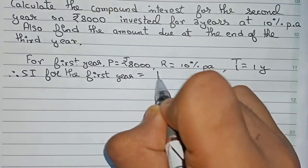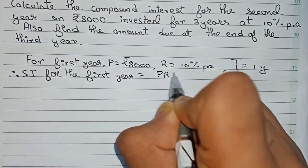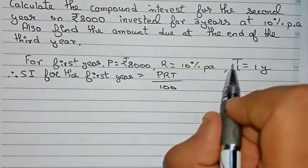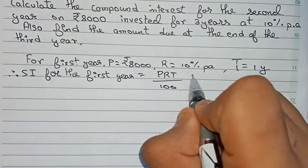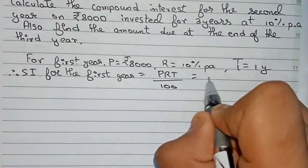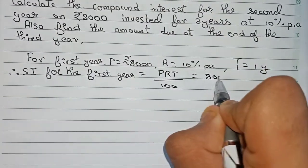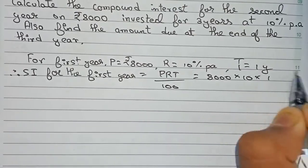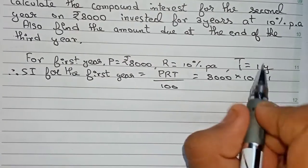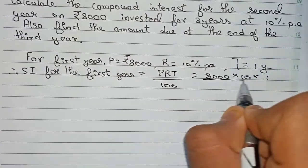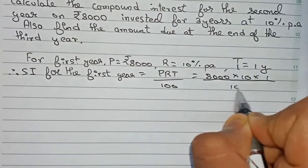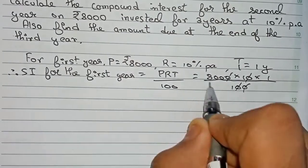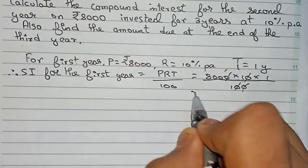The SI formula is P×R×T divided by 100. So SI = 8000 × 10 × 1 / 100. Cutting the zeros, we get SI for the first year = rupees 800.